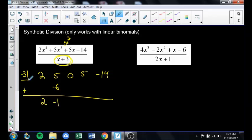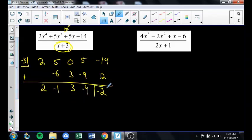So I'm doing 5 minus 6 is negative 1. Then I multiply. Negative 3 times negative 1 is 3. Add these up. 0 plus 3 is 3. Multiply. Negative 3 times 3 is negative 9. Add those up. 5 minus 9 is negative 4. Multiply. Negative 3 times negative 4 is 12. Negative 14 plus 12 is negative 2. So I've gone through that synthetic process.